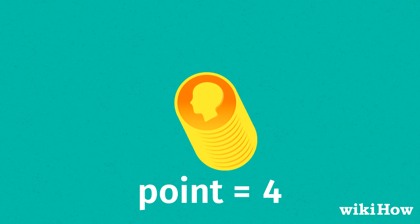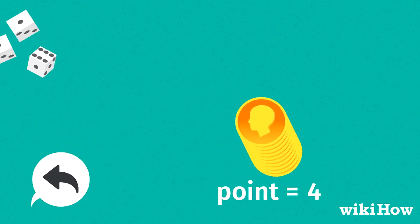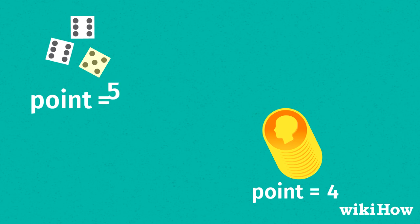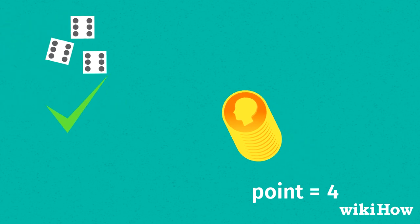Once the banker has set their point, the player to their left rolls next. If they beat the banker by rolling a higher point, or rolling an automatic win, they win the bet.